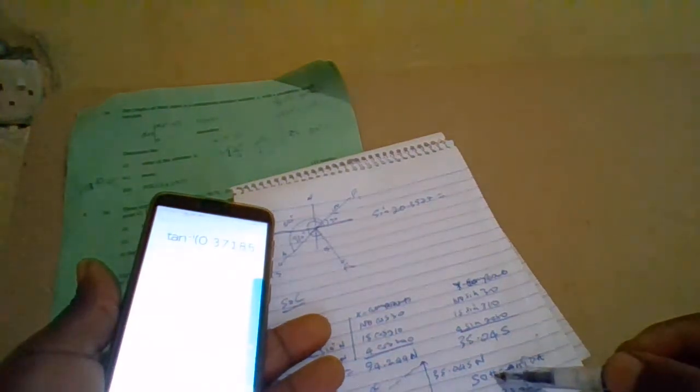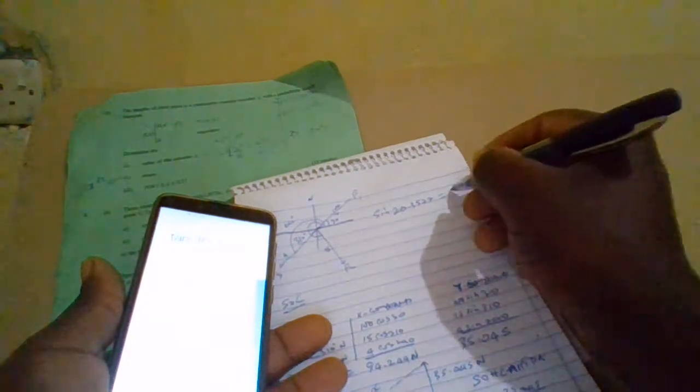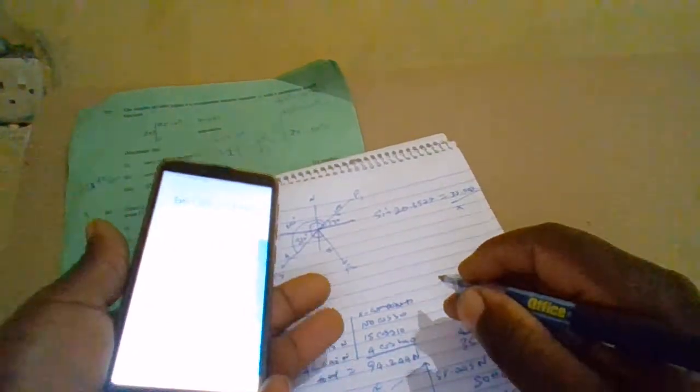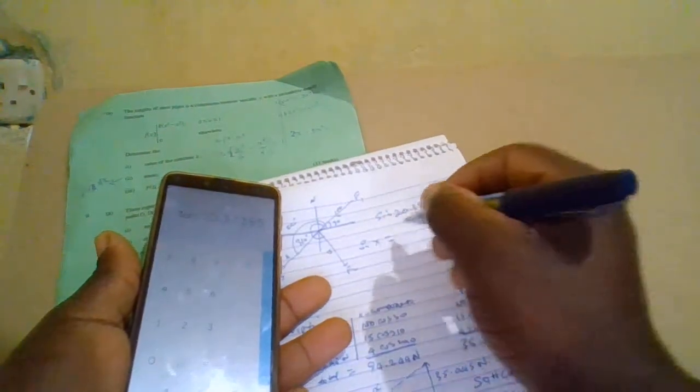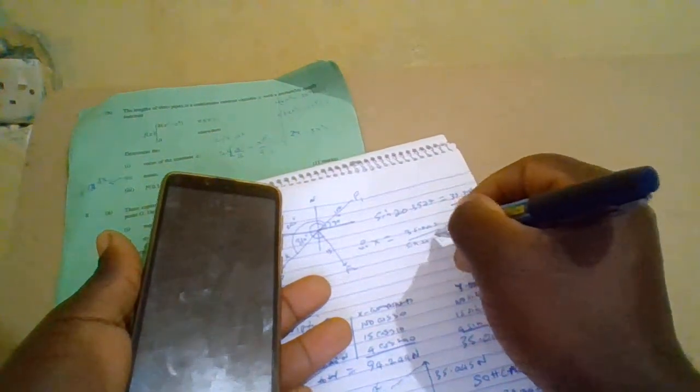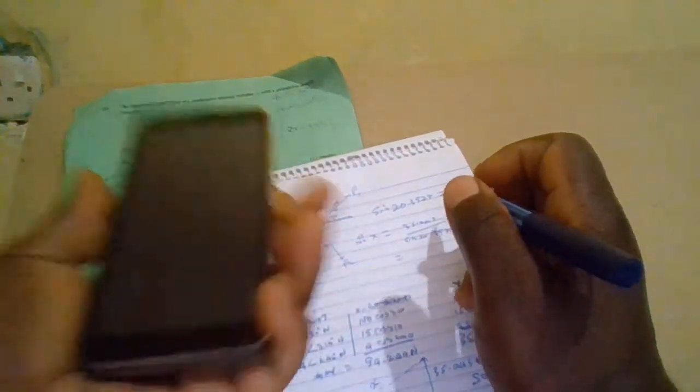Sine is opposite over hypotenuse. Opposite is 5.045, hypotenuse is x. Therefore x equals to 35.045 over sine 20.3977. Use the phone to calculate, 5.045 divide by sine 20.3977 equals to 100.55.